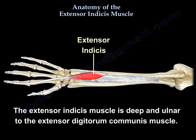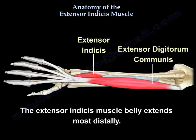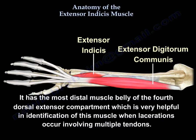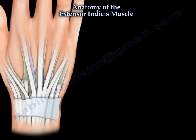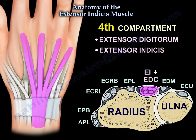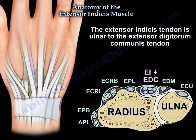The extensor indices is deep and ulnar to the extensor digitorum muscle. Its muscle belly extends most distally — it has the most distal muscle belly of the fourth dorsal extensor compartment, which is very helpful in identifying this muscle when laceration involves multiple tendons. It is present in the fourth dorsal compartment of the wrist, and a cross-section shows all six compartments and the contents of each. The extensor indices tendon is ulnar to the extensor digitorum tendon.